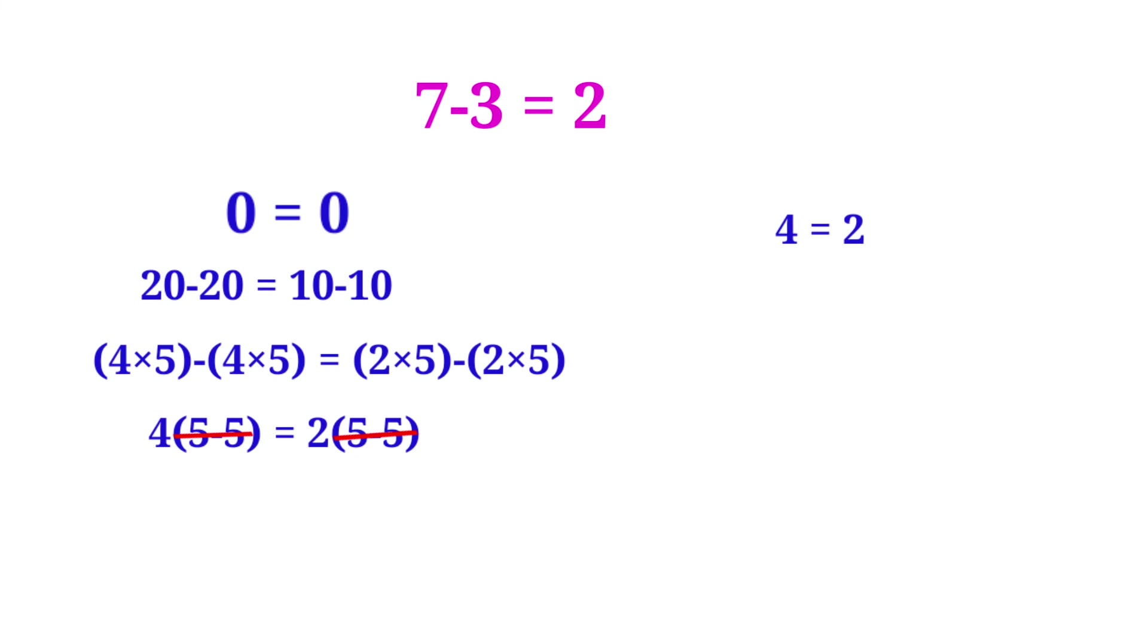Now the remaining is 4 is equal to 2. Now we can write the 4 as 7-3. So 7-3 is equal to 2. Now it is proved.